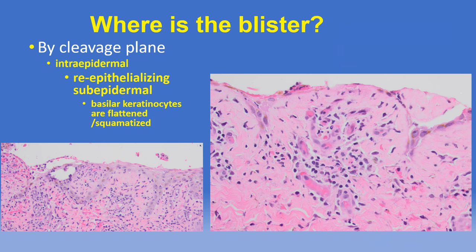An important aspect of subepidermal blisters is that over time they tend to re-epithelialize, looking different from a primary intraepidermal blister. With re-epithelialization, keratinocytes creep across the dermal blister floor with a flattened, spindled appearance rather than the normal cuboidal profile. This is called basilar squamatization, seen in wound healing and lichenoid reactions such as lichen planus. When we see these flattened cells, it indicates a re-epithelializing sub-epidermal blister and should not be misinterpreted as a primary intraepidermal blister.